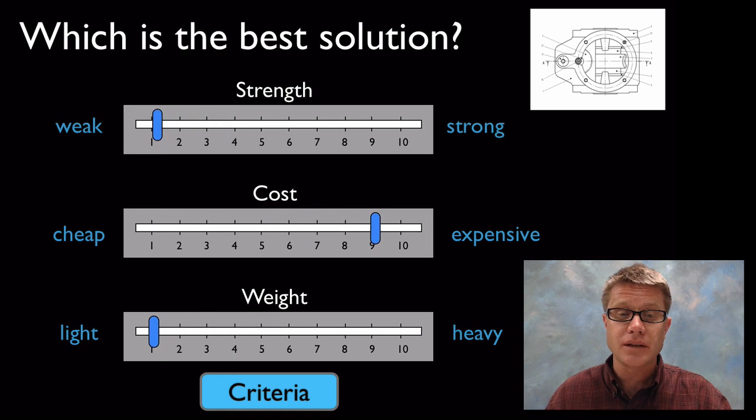And if I want to go ultra light, that's going to make it really weak and really expensive. So what I can do is move these sliders back and forth until I optimize the best solution.